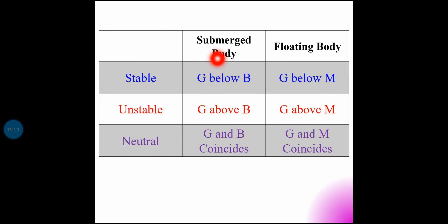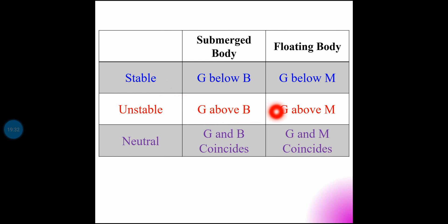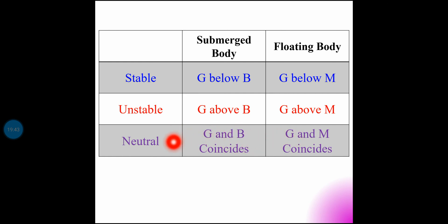In summary: for a submerged body, if the center of buoyancy B is above the center of gravity G, it is stable equilibrium. For a floating body, if the metacenter M is above G, it is stable equilibrium; if M is below G, it is unstable equilibrium; and if M coincides with G, it is neutral equilibrium.